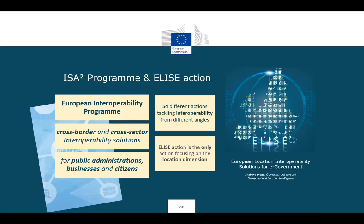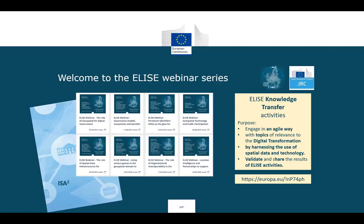Within the context of ELISA knowledge transfer activities, we are organizing periodic webinars and workshops that aim to engage in an agile way with topics of relevance to digital transformation, and to promote the consolidated results of ELISA activities. Today's workshop will present the results of the API for INSPIRE activity, which was investigating new developments in geospatial standards and technologies — in particular the new OGC API Features and OGC SensorThings API.